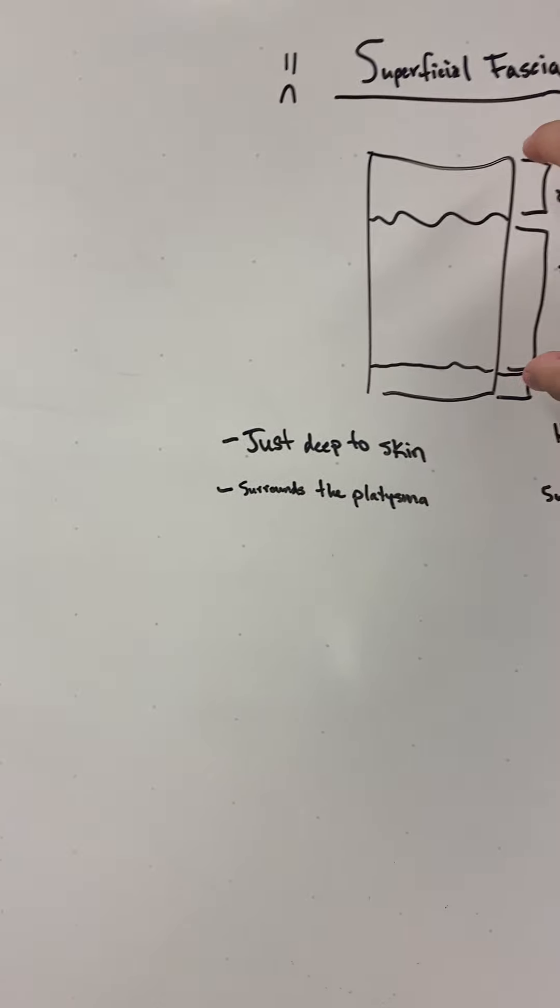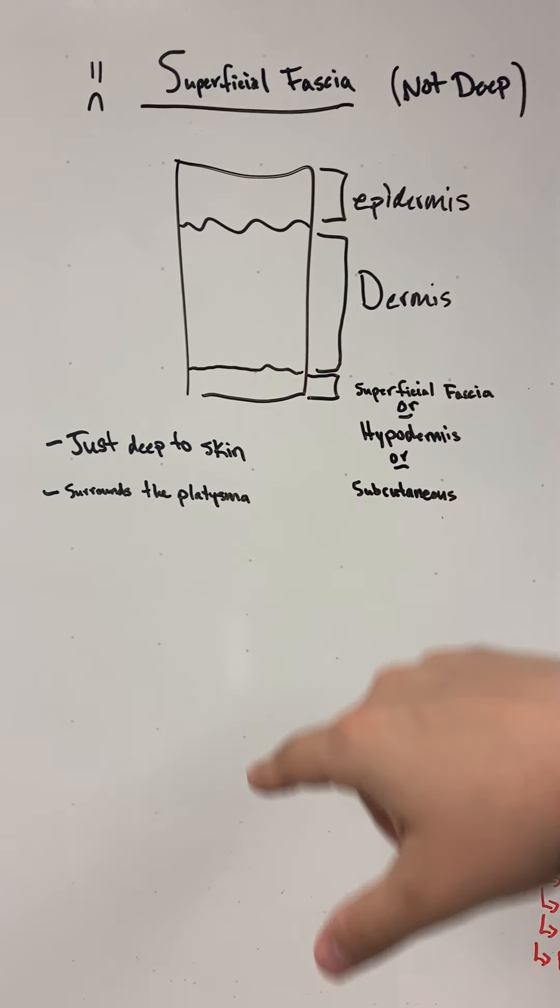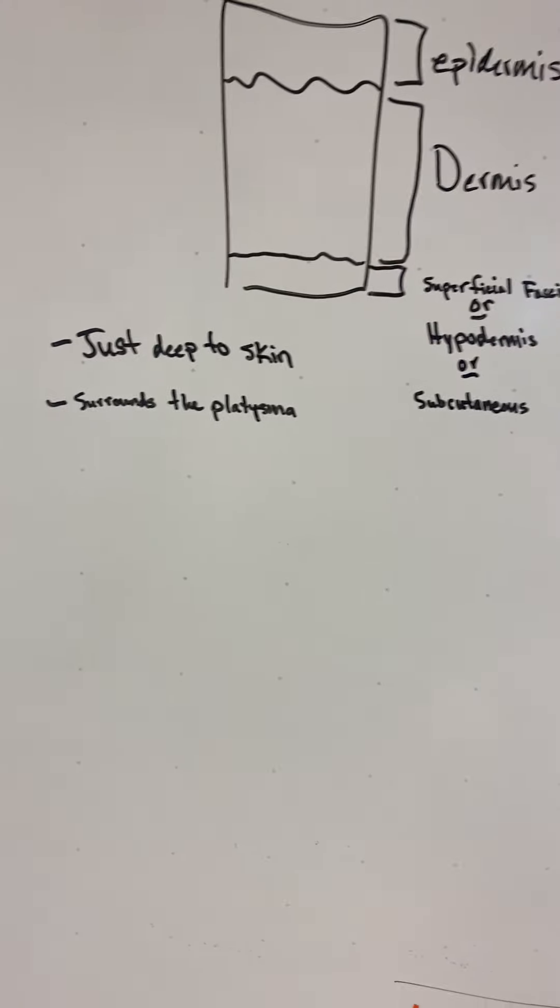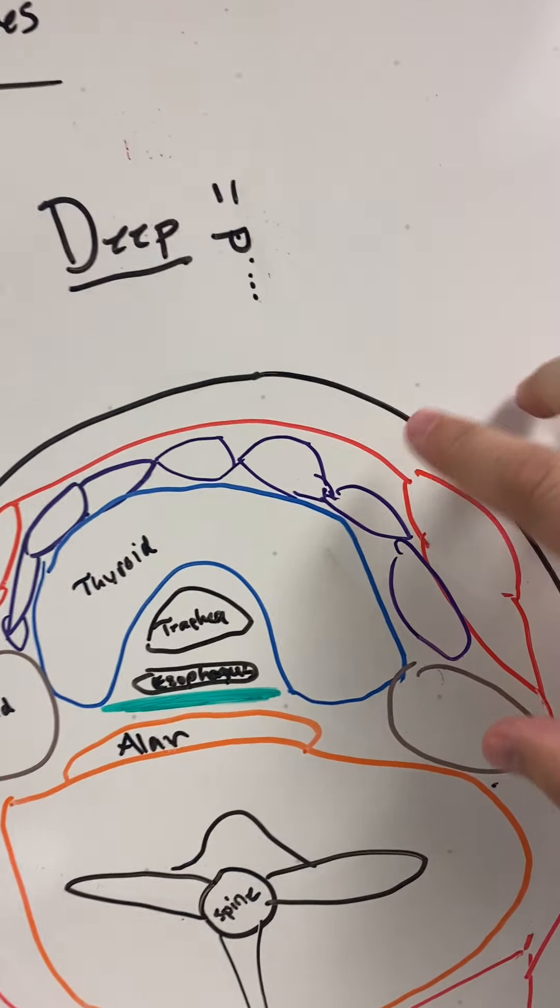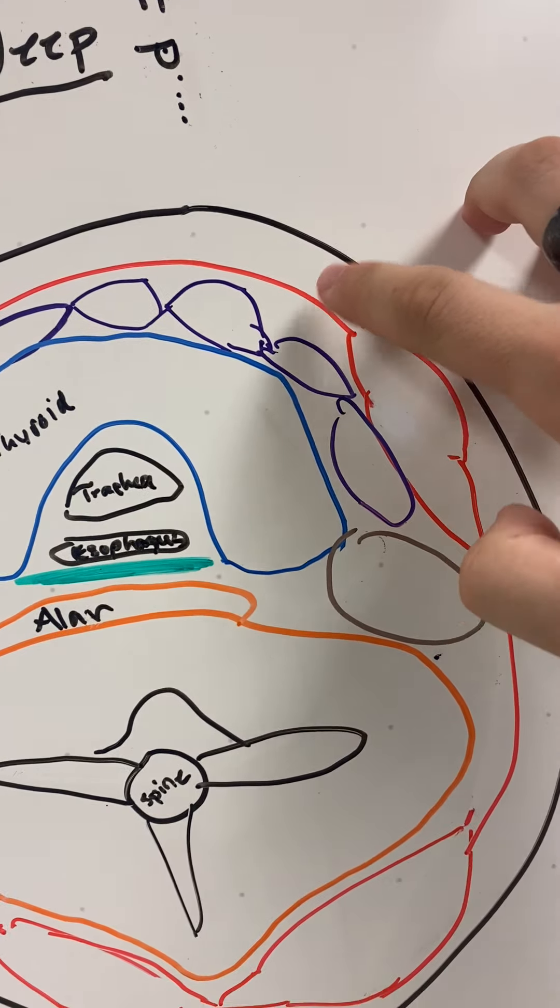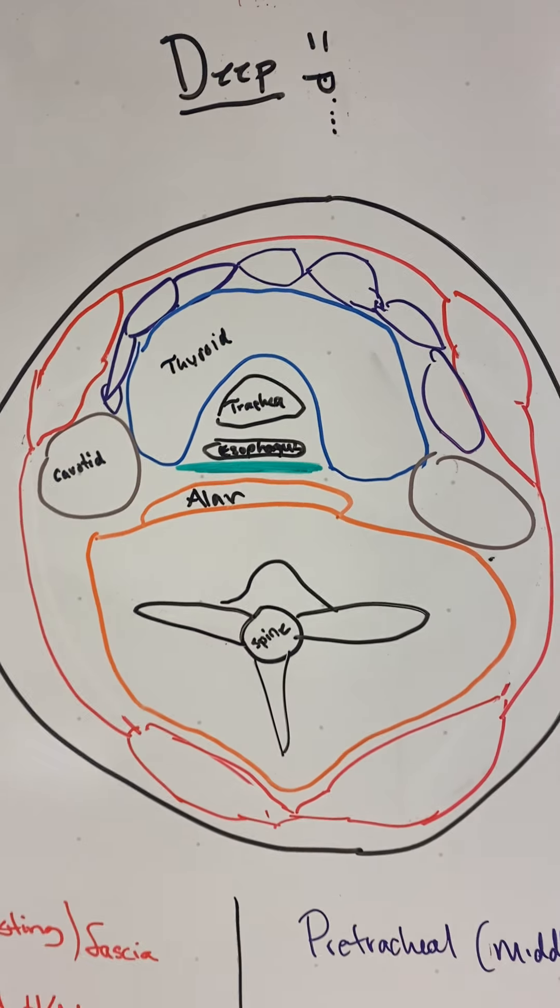It's just deep to the skin, so that little chunk is just deep to it and it surrounds the platysma, which is that neck muscle. If we were to talk about it, from the black to the red, that'd be that space we're talking about.